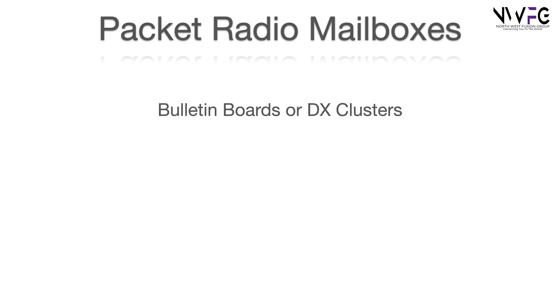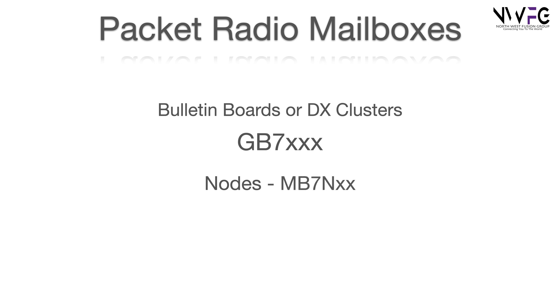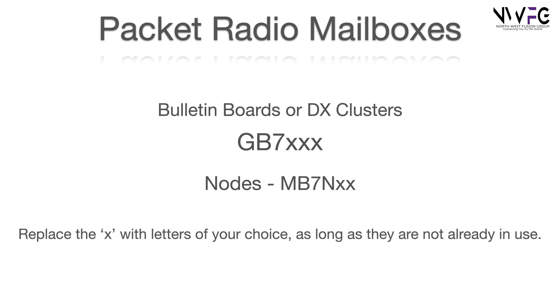Packet radio mailboxes include bulletin boards or DX clusters, and they all start GB7i and have 3 letters. Nodes are MB7N with 2 letters following. You can replace the X with letters of your choice as long as they're not already in use, and these can be kept by full licensees only.